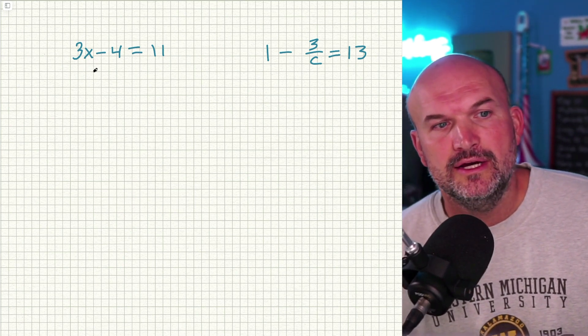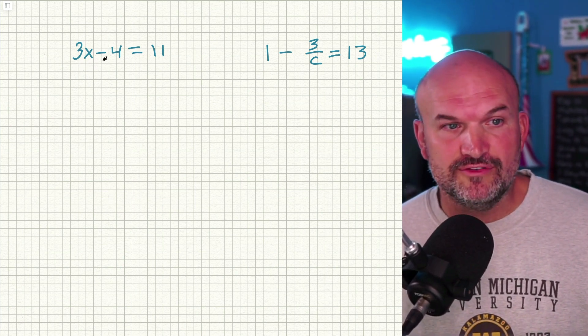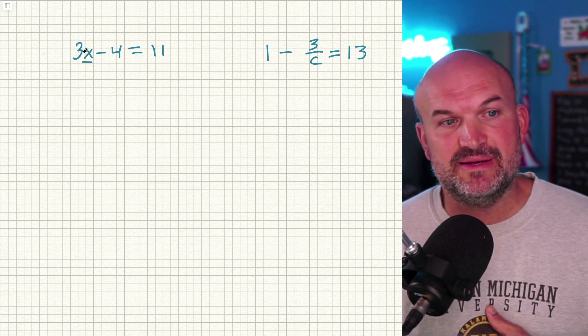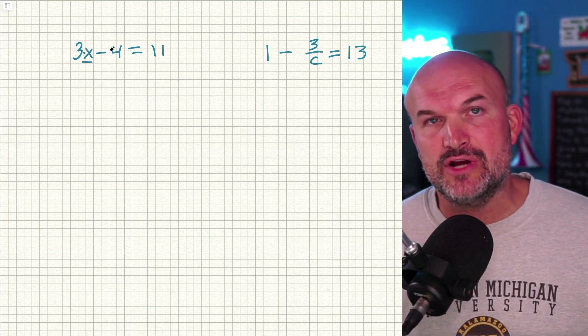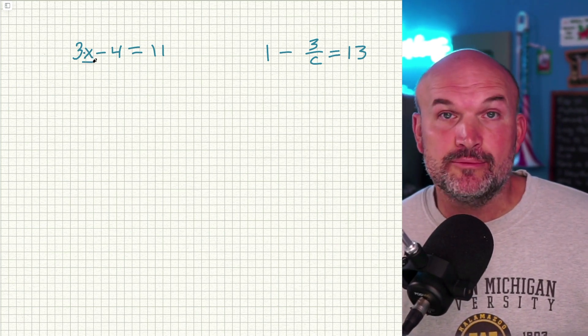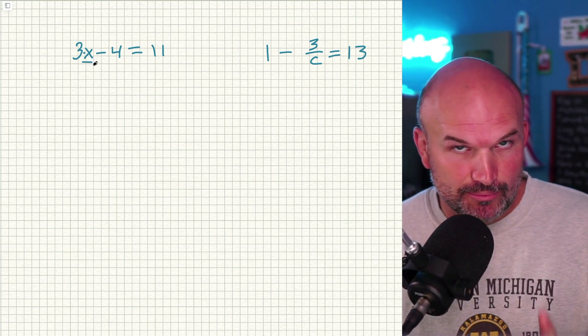All right, so quick review. When we want to solve a two-step equation, what we're trying to do is get the X all by itself. You can see this X is being multiplied by three and being subtracted by four. So what we want to do is undo the operations that are being applied to the X. But more importantly, we want to undo using the reverse order of operations.